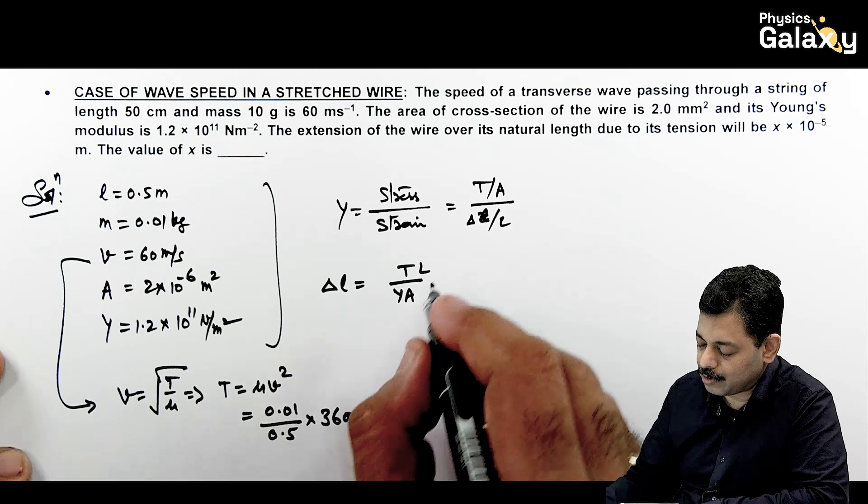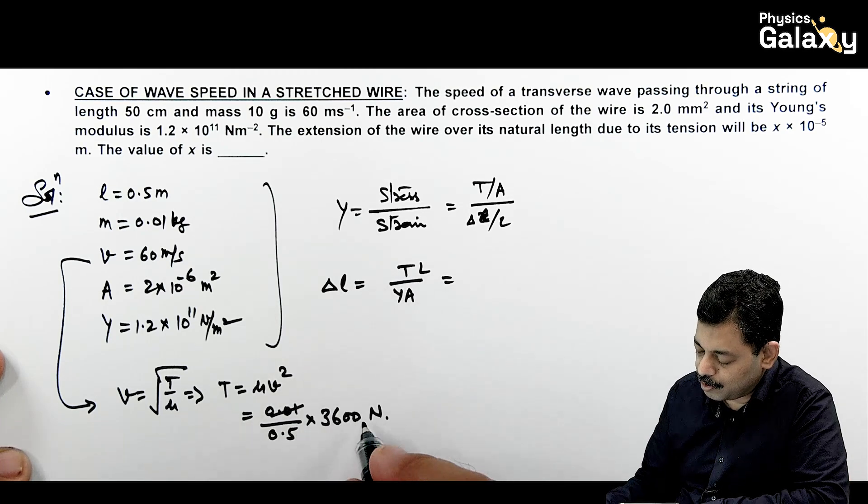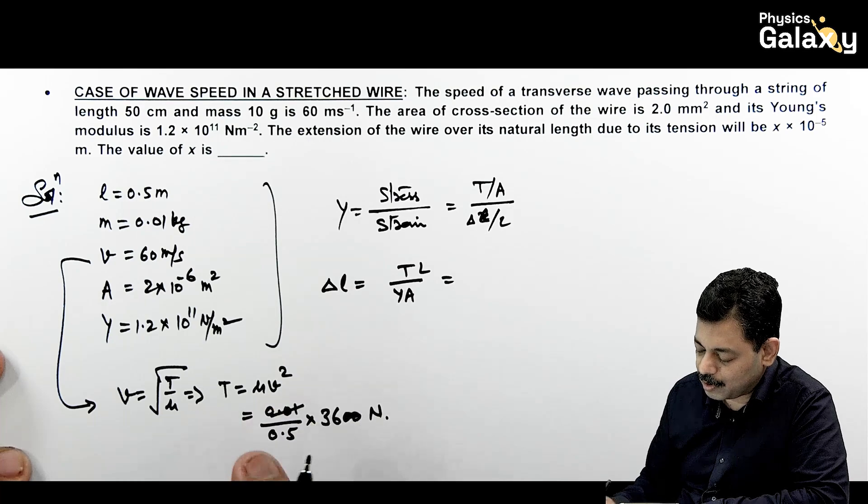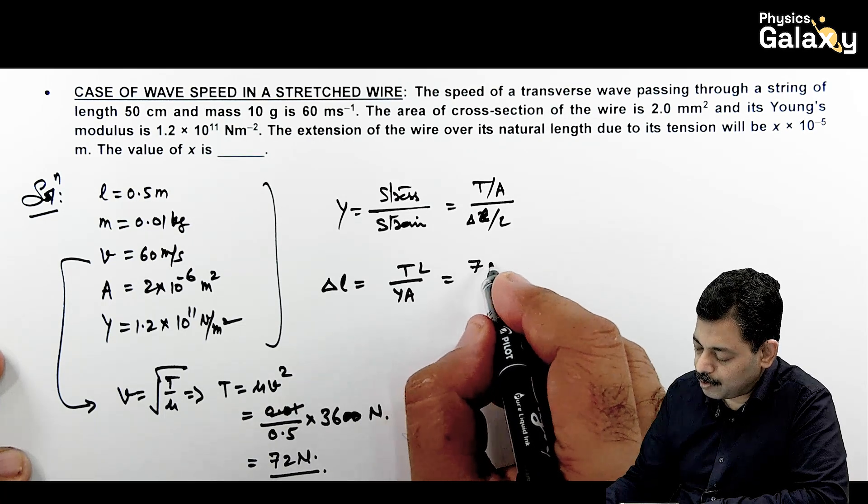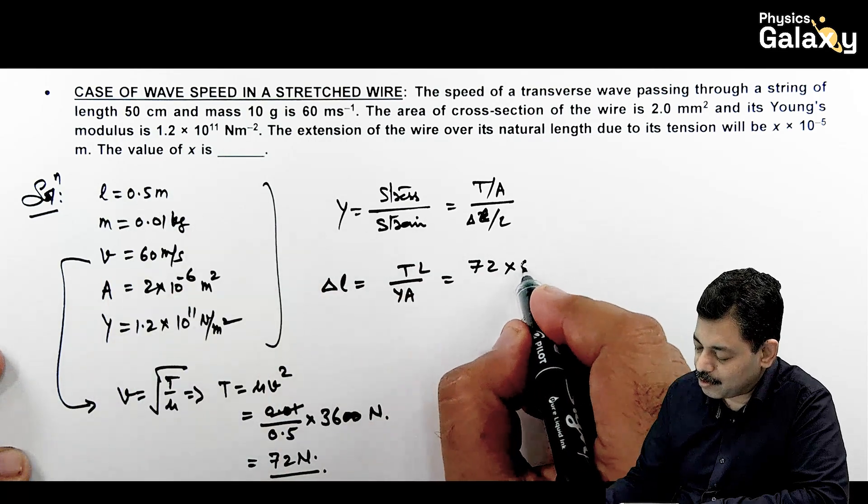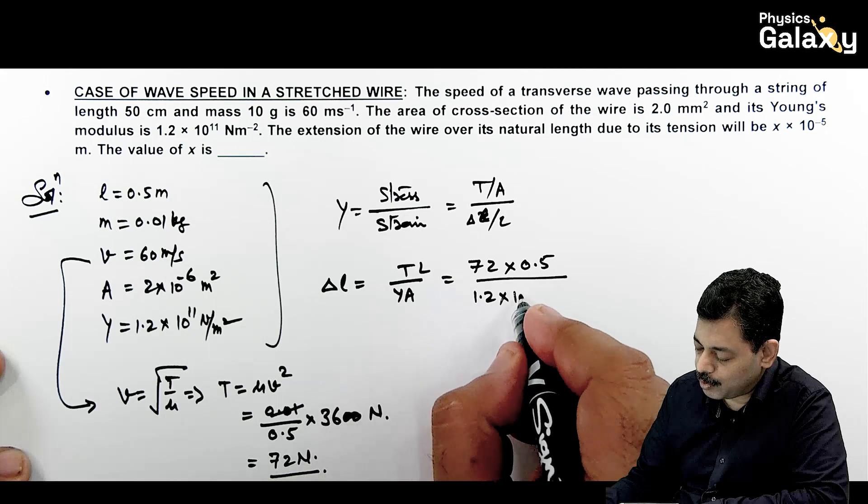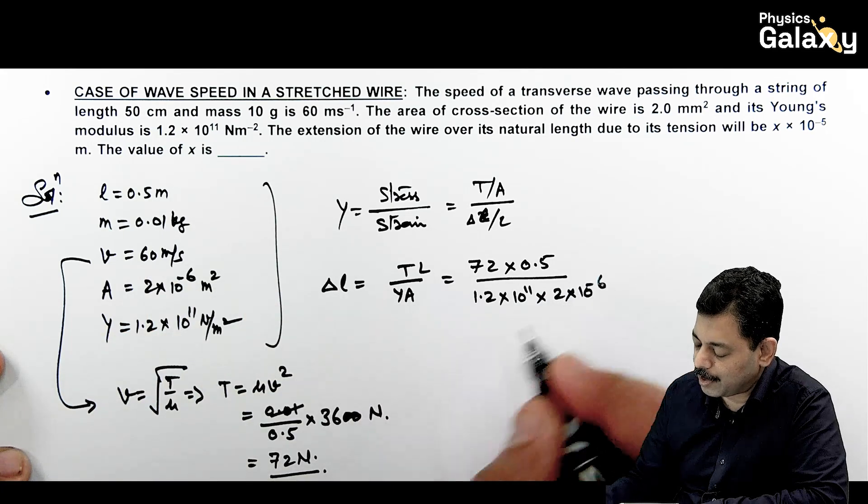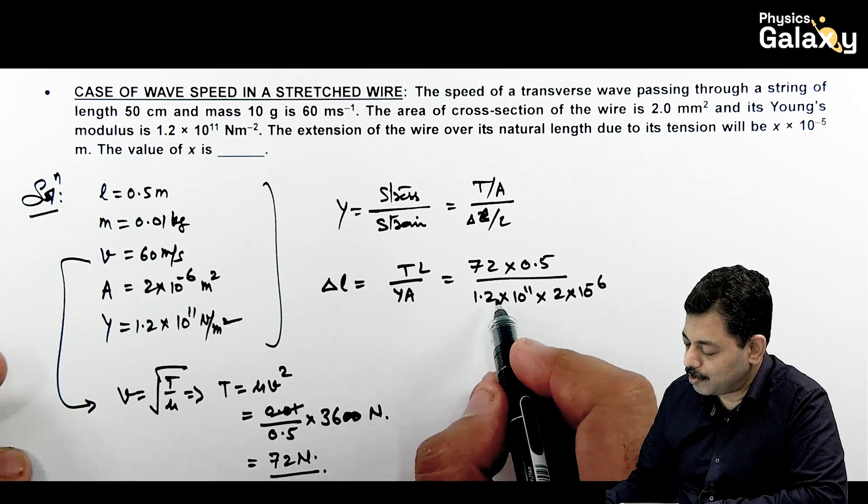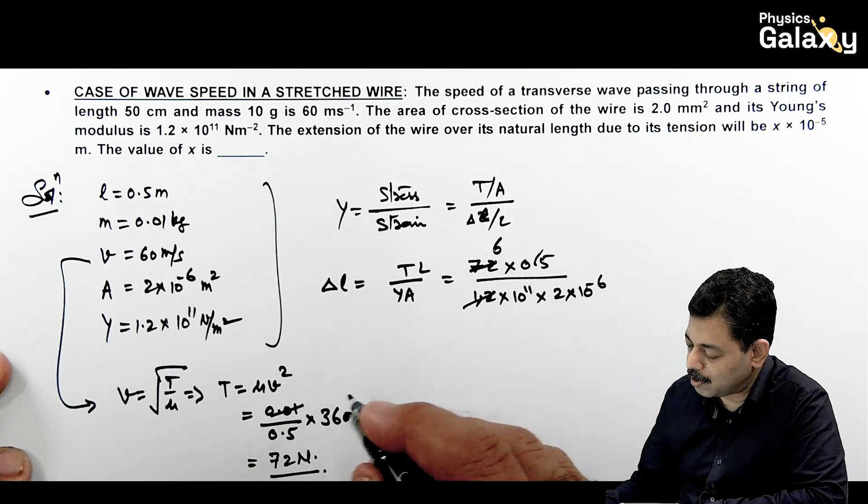Data substitute karta hoon, then we'll do calculation. So here 0.01 or 0.5 cancel. This comes out to be 72 newton. This 72 multiplied by length is 0.5 divided by Young modulus is 1.2 into 10 to power 11 multiplied by area here is 2 into 10 to power minus 6.